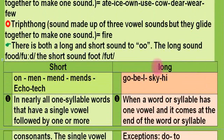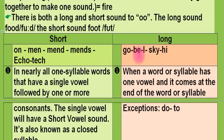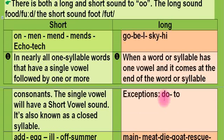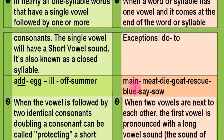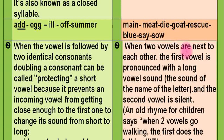Now let's move on to talk about long vowel sounds. When a word or syllable has one vowel and it comes at the end of the word or syllable, the vowel is long — for example: 'go', 'be', 'I', 'sky', 'high', 'may', 'me', 'buy', 'rescue'. When two vowels are next to each other, the first vowel is pronounced with its long vowel sound, which is the sound of the name of the letter, and the second vowel is silent.